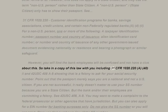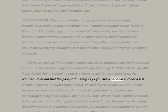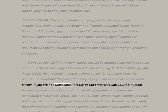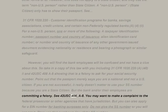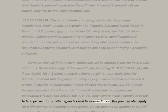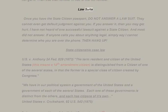Take in a copy of this law including 31 CFR 1020.220(a)(4)(ii) and 42 USC 408(8), showing that it is a felony to ask for your social security number. Point out that the passport merely says you are a national and not a U.S. citizen. If you are not successful, it really doesn't matter to use your SSN because you are a state citizen — but the bank or their employees are committing a felony. See 42 USC 408(a)(8). You can also apply for an EIN number for banking purposes only — do not give the SSN or you will not get it, then use that number in lieu of the SSN.